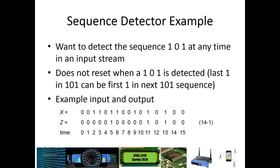The sequence that we were looking for in particular was 1, 0, 1. We were looking for 1, 0, 1 at any point in the sequence. We saw this example stream of bits coming in on X and the corresponding output value on Z. So 1, 0, 1 is detected for the first time right here, and we get an output of 1.